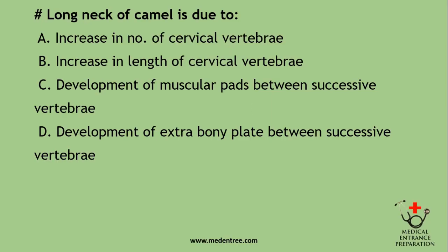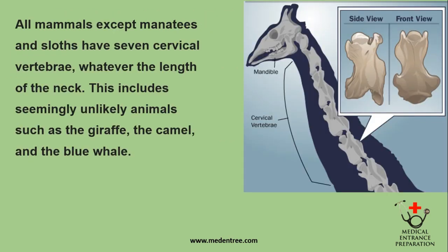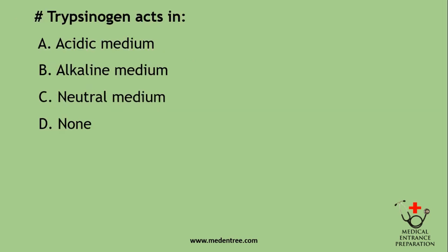Long neck of camel is due to: increase in number of cervical vertebrae, increase in length of cervical vertebrae, development of muscular pads, or development of extra bony plates? Although the camel's neck is very long, there is no actual increase in number. All mammals, except manatees and sloths, have seven cervical vertebrae whatever the length of the neck — including the giraffe, camel, and blue whale. The length of cervical vertebrae is simply increased. Trypsinogen acts in: acidic, alkaline, or neutral medium? Trypsinogen acts in alkaline medium.